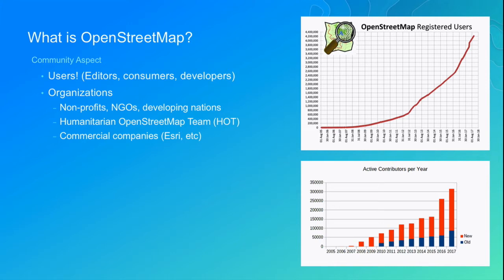There are also a lot of organizations that are part of that community. At the forefront would be nonprofits, NGOs, and organizations that do work in developing nations. A lot of times, OpenStreetMap is the best data source for those parts of the world, particularly Africa. Even our commercial data providers are lacking in a lot of those areas, so OSM is often the best option.